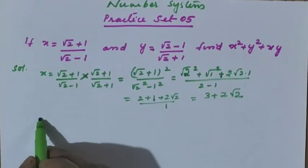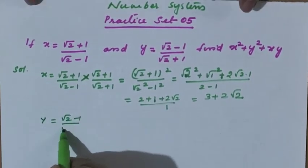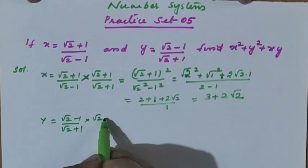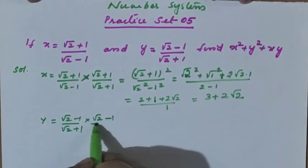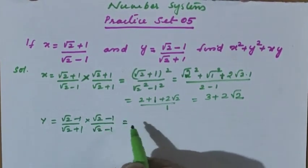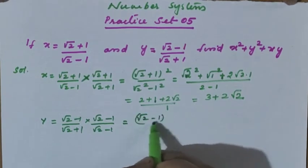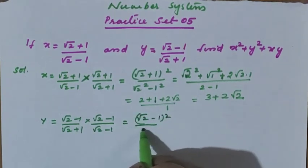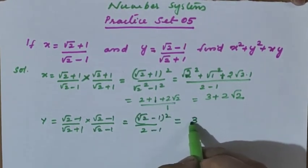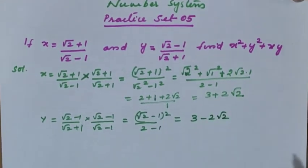Similarly, y equals root 2 minus 1 by root 2 plus 1, multiplied by root 2 minus 1 divided by root 2 minus 1. It equals root 2 minus 1 whole square by 2 minus 1. If you simplify and expand, you will get y equals 3 minus 2 root 2.